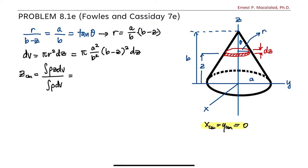Since we assume that the object is uniform, rho will cancel. Therefore, this is now equal to the integral of z times pi a squared over b squared times b minus z squared dz, divided by integral of pi a squared over b squared times b minus z squared dz.